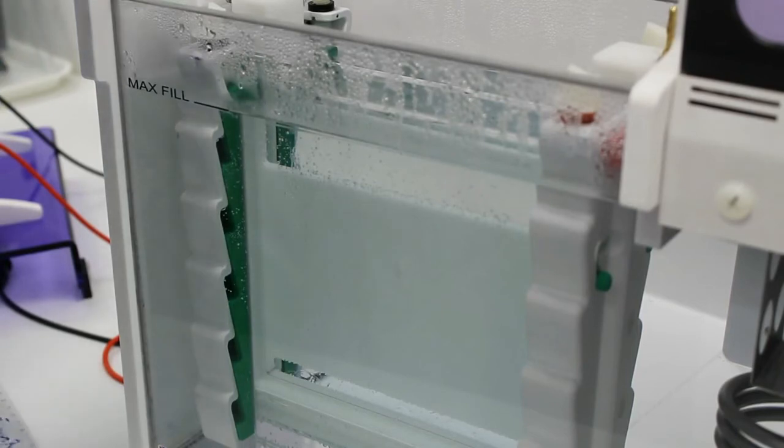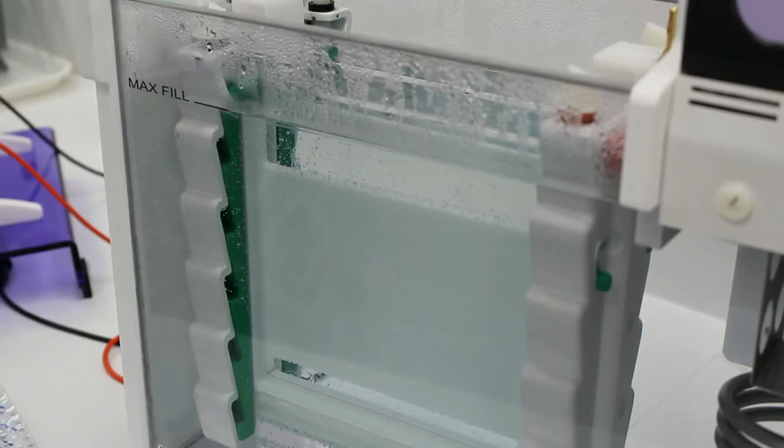You'll notice when you take the lid off the tank to load samples the heating will cut out because there's a magnetic switch in there that prevents the moving parts from going while the lid's off.